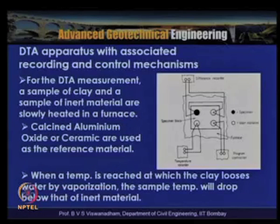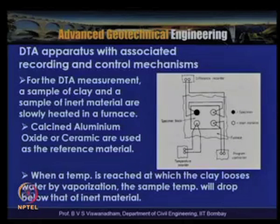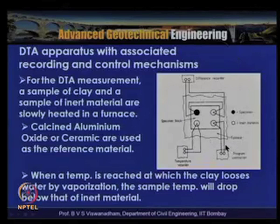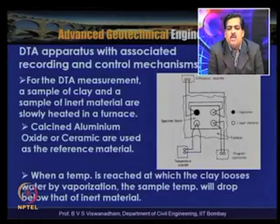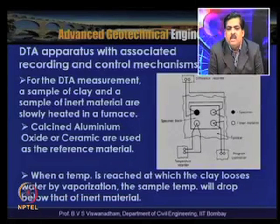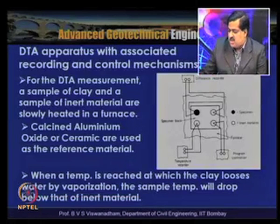The DTA apparatus is shown with recording and controlling mechanisms. A sample of clay and a sample of inert material are slowly heated in a furnace. Calcined aluminum oxide or ceramic are used as reference materials. When a temperature is reached at which the clay loses water, the sample temperature will drop below the inert reference material, which is used as the indication.